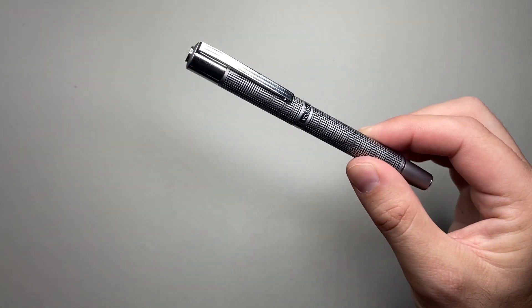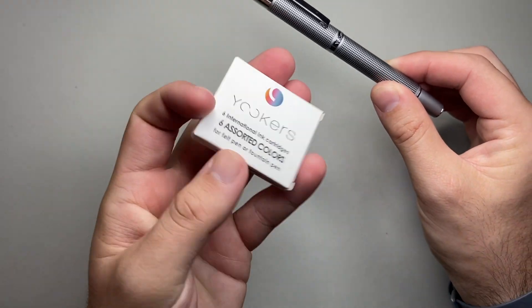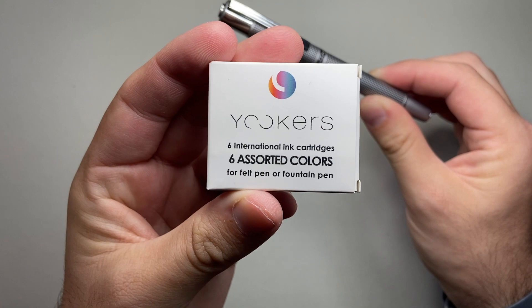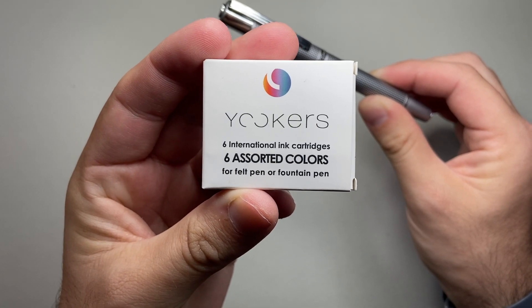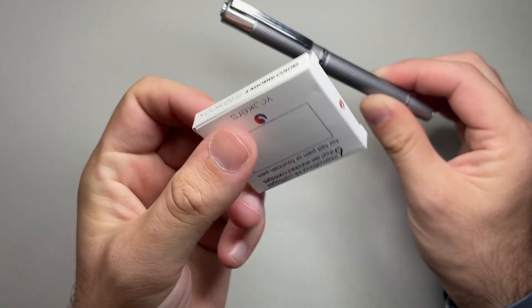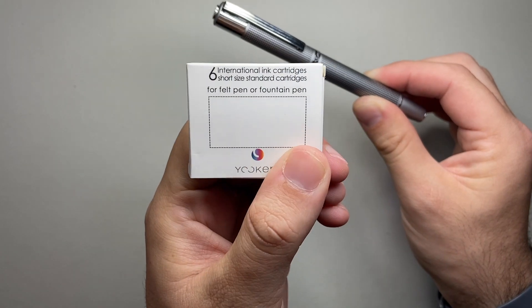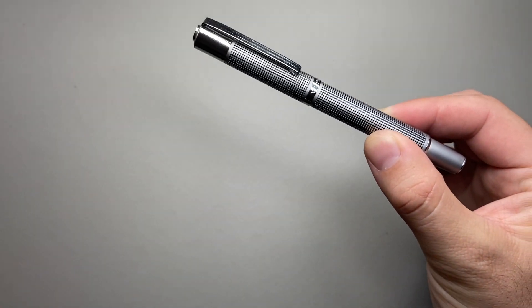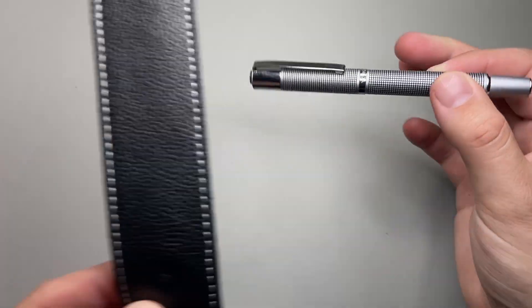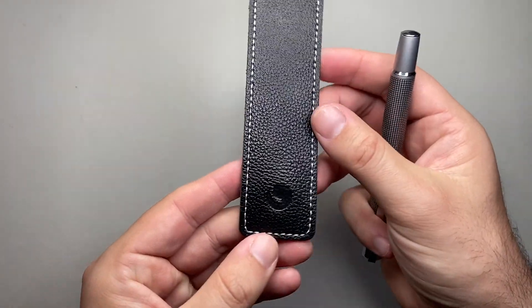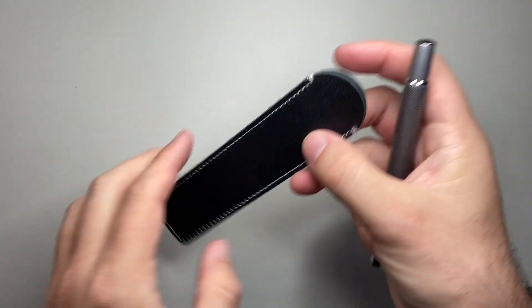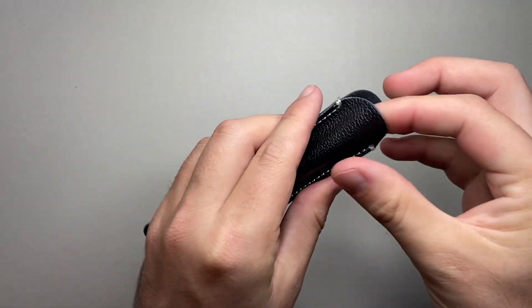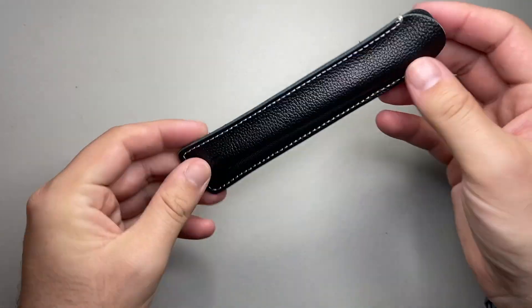Mine also came with a couple of things, so I got a pack of six assorted Yookas cartridges which has a range of inks. These are standard international ink cartridges and they fit in this pen. I also got a nice little pen sleeve here, which is made of a faux leather with the Yookas logo there on the front, in which the pen fits in very nicely and comfortably.